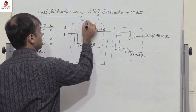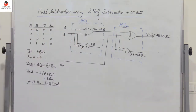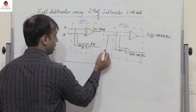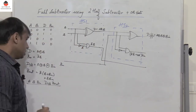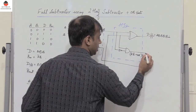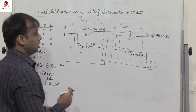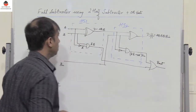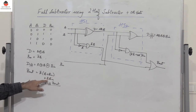So this is HS1 and this is HS2. Next, the second output of HS1 (which is A̅B) and the second intermediate output of HS2 are both passed through a two-input OR gate — which is the additional OR gate we mentioned. That gives us the borrow out of the full subtractor: Borrow_out = A̅B + B_in(A̅ + B).